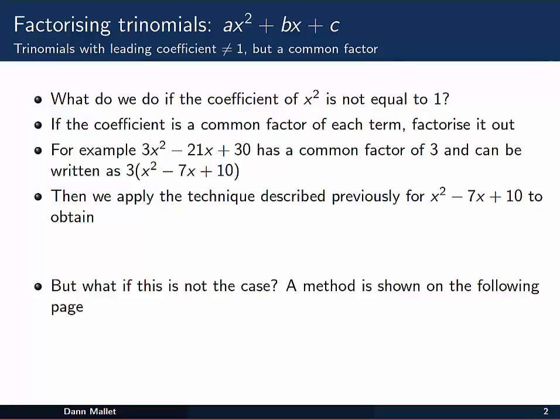Well, if the coefficient is a common factor of each term in the trinomial or the quadratic, we can just factorise it out. So for example, 3x² - 21x + 30 has a common factor of 3 in each term. So we can pull that out and write it as 3(x² - 7x + 10).